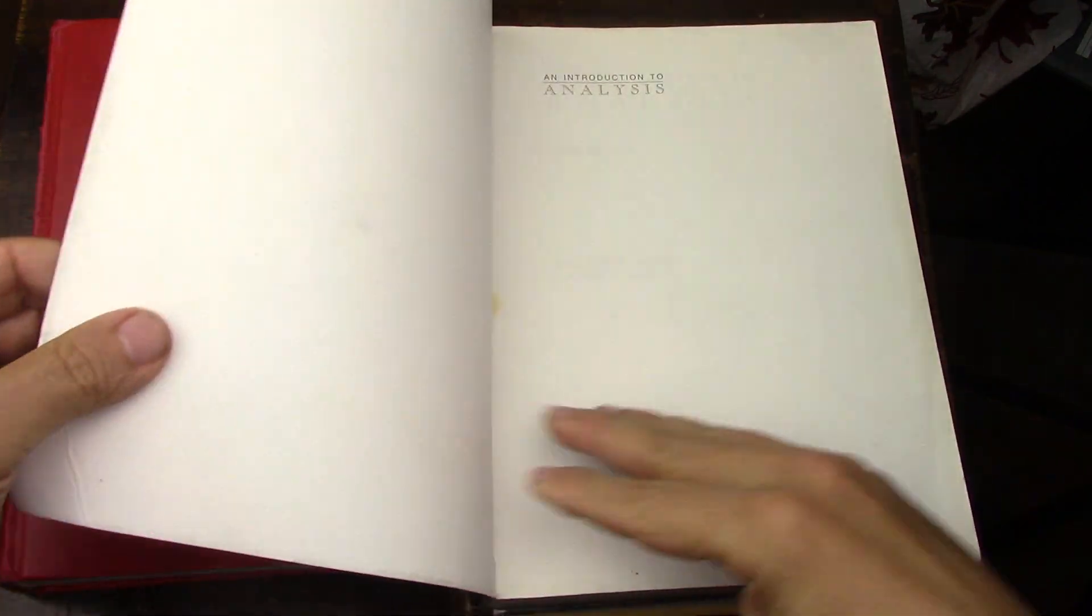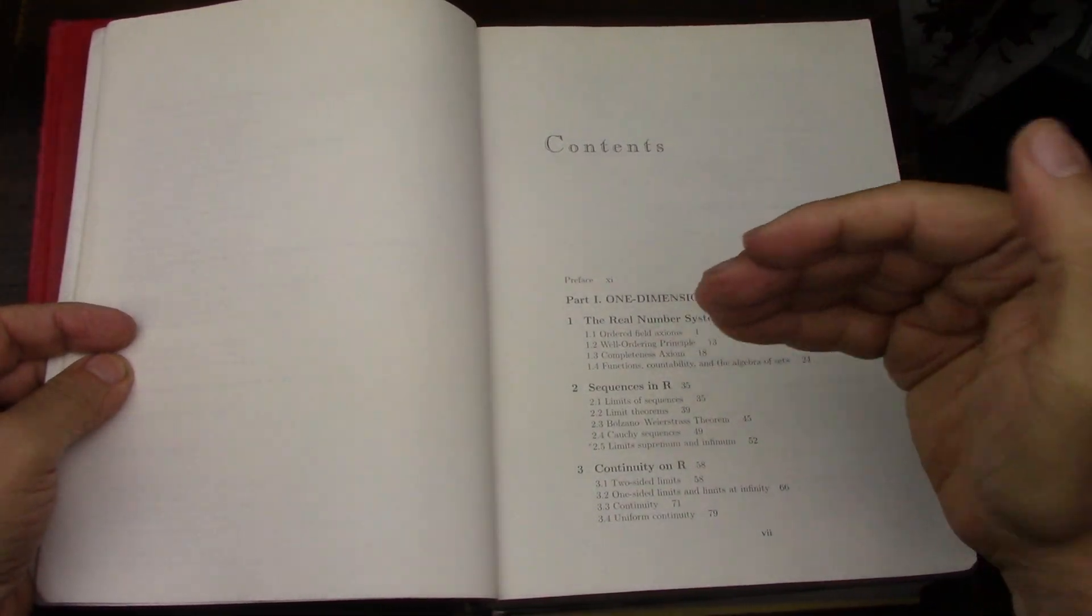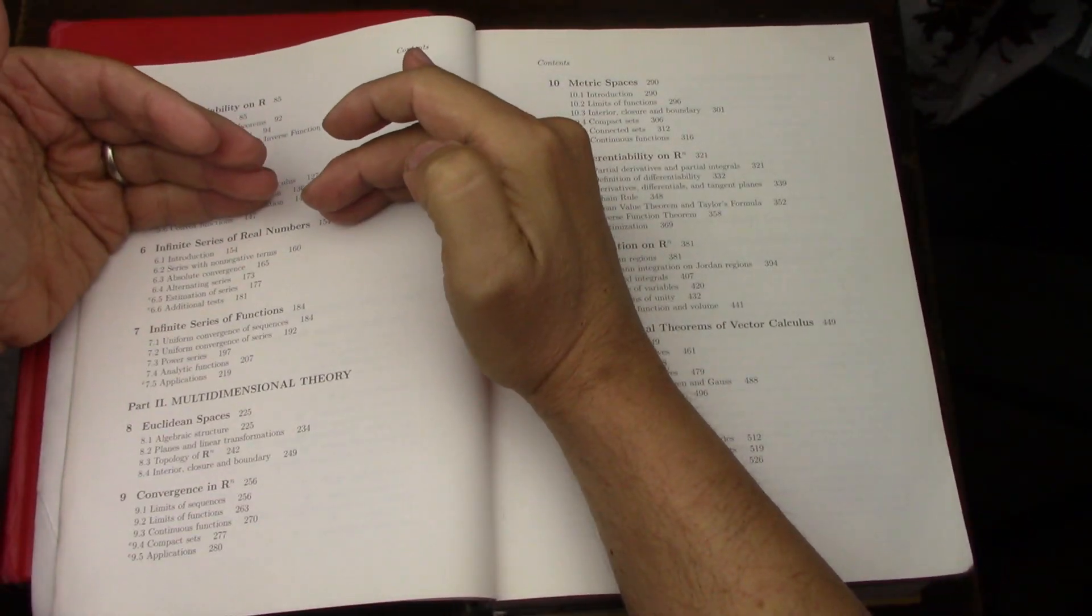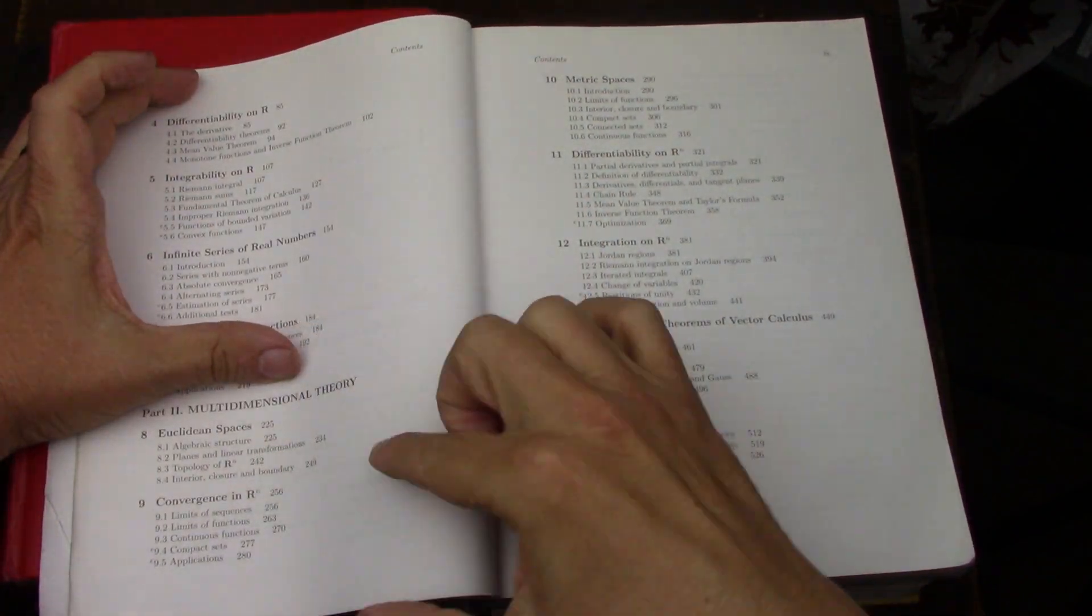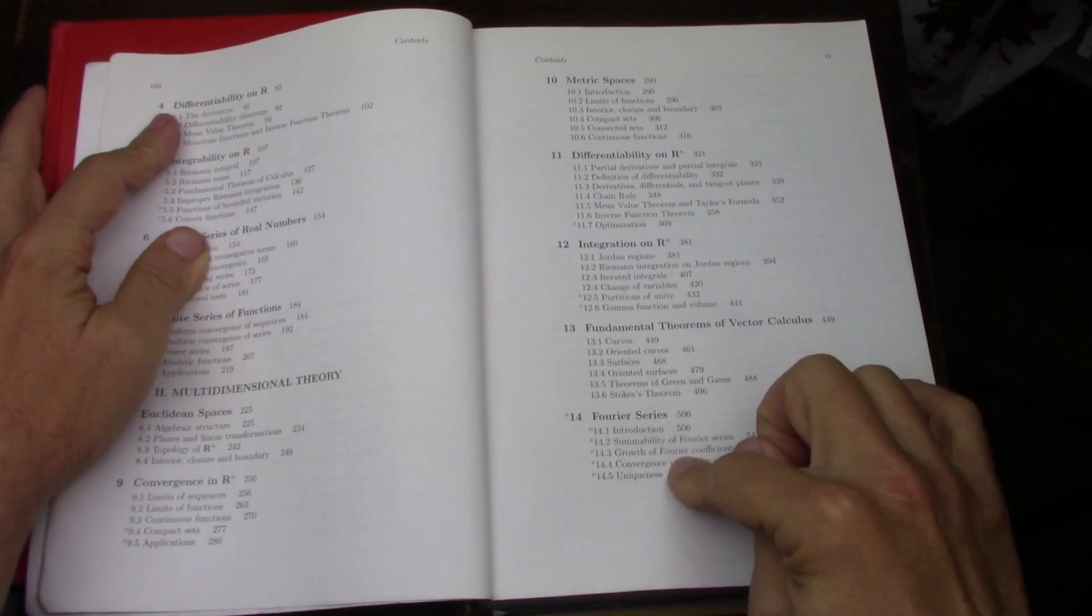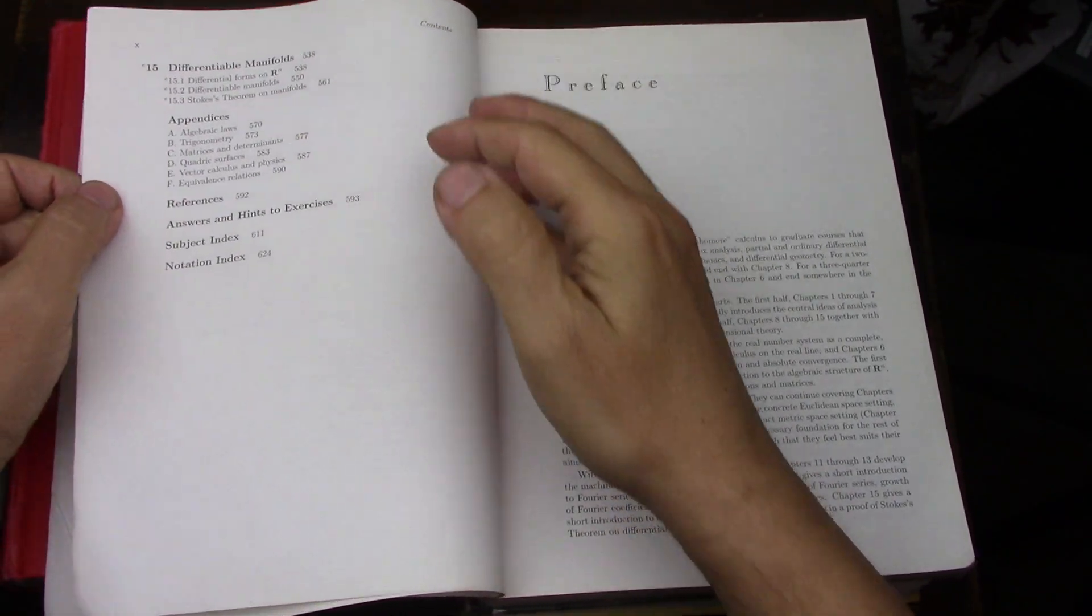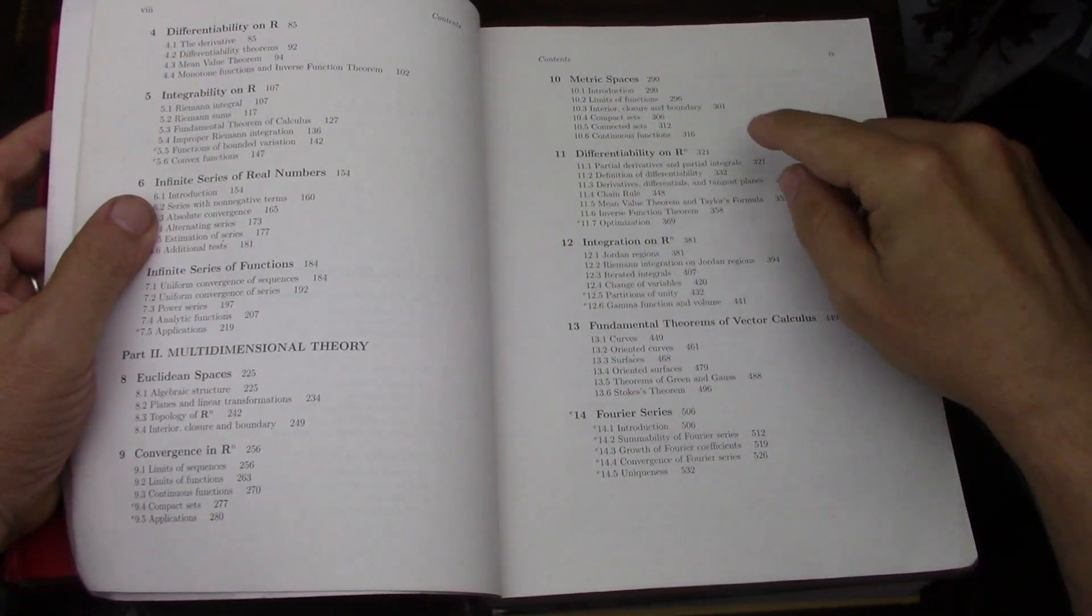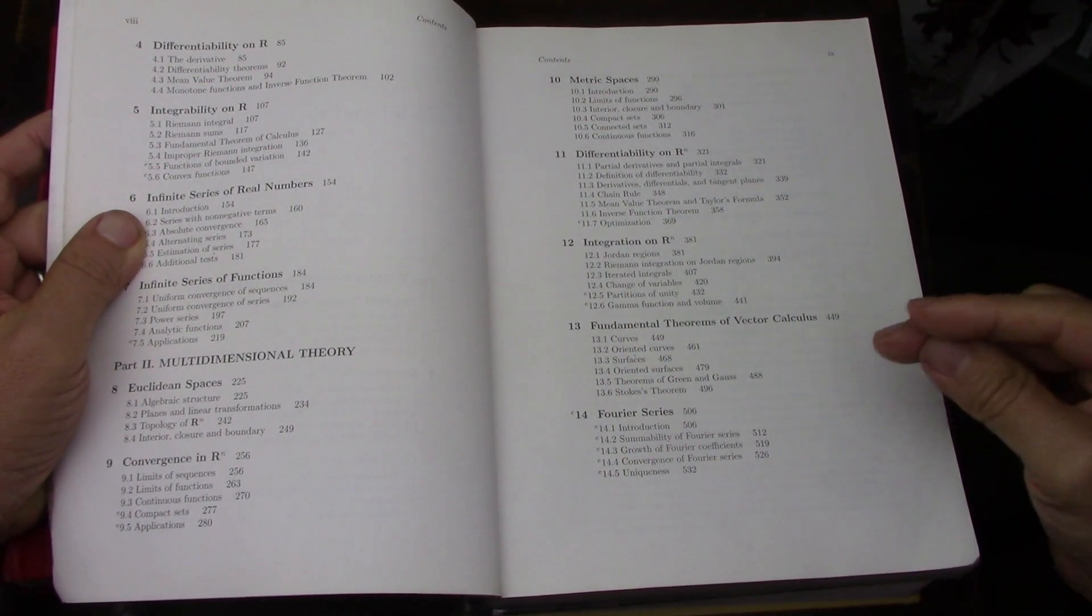In the case of Wade, of course, if you've seen any of my videos, you've seen this book a million times. Real number systems, sequences, continuity, differentiation, integration, then infinite series, then do it again—multi-dimensional—ending with Fourier series and some differential geometry, differential manifolds, integration R to the n, differentiation R to the n, some metric spaces, very interesting.